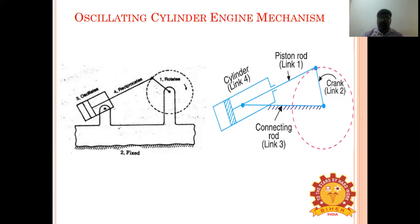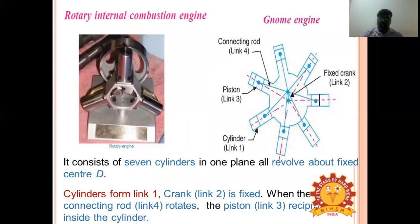The oscillating cylinder engine mechanism, also called the gnome or rotary engine, is used to convert reciprocating motion into rotary motion. It was used in aircraft in early days and contributed greatly to the development of mechanical flight. It has been replaced by gas turbines and has an odd number of cylinders — five, seven, or nine, depending on the size of the engine.